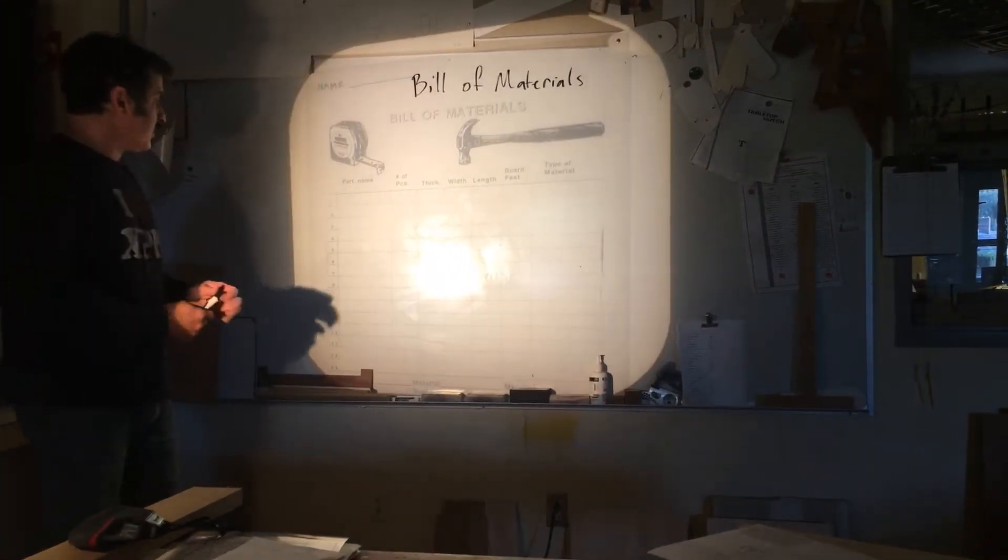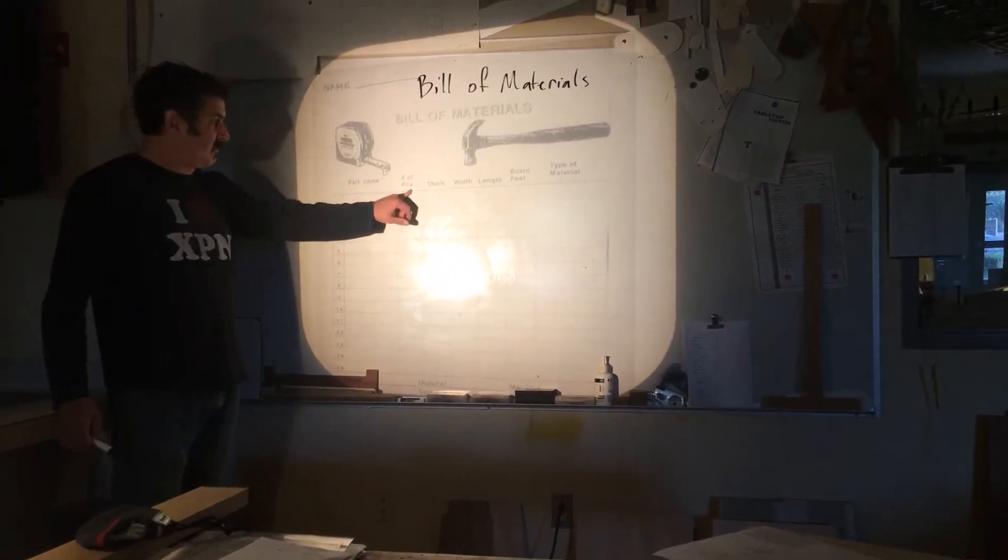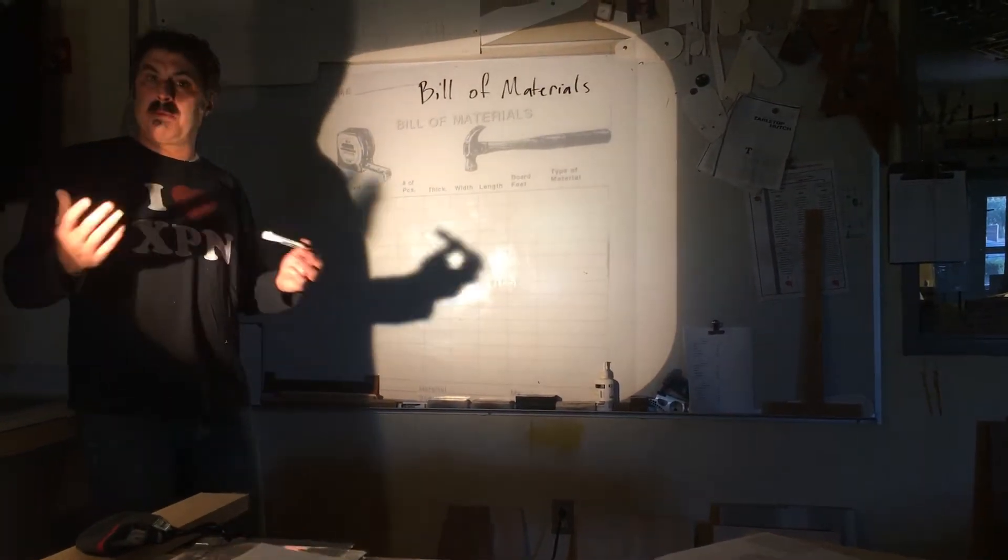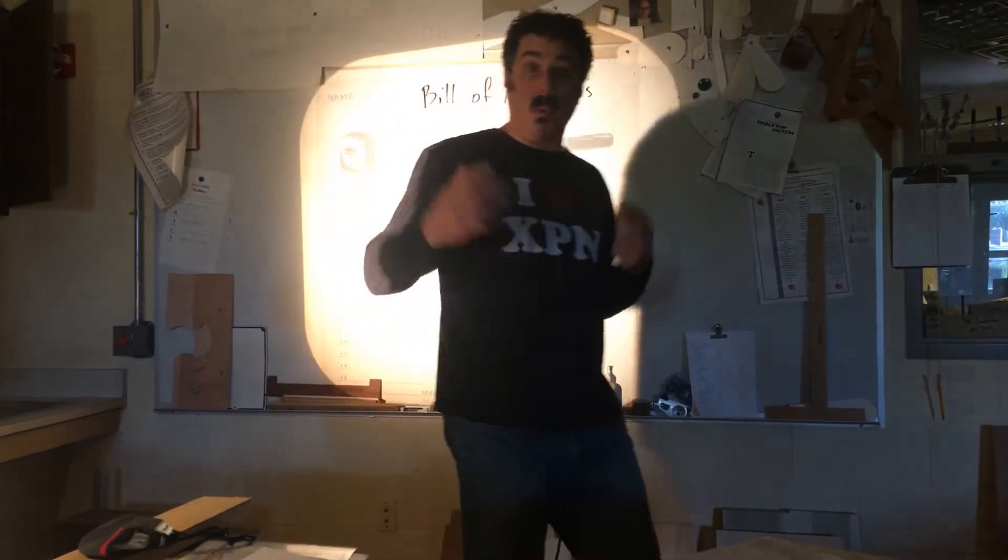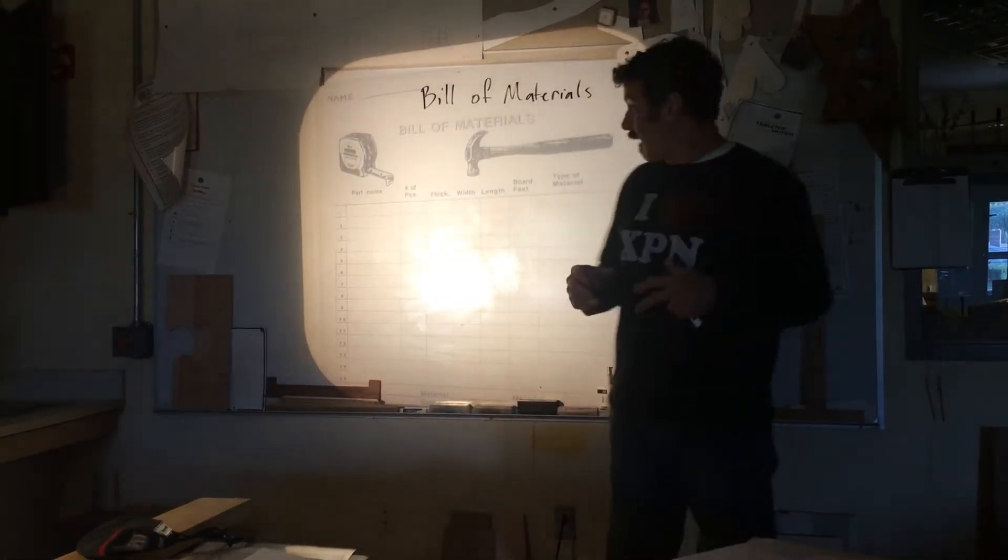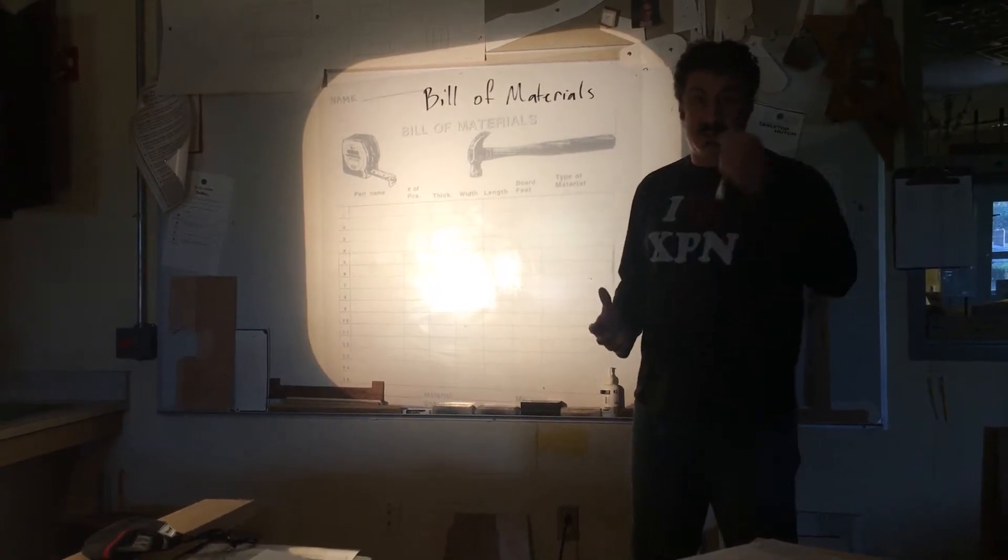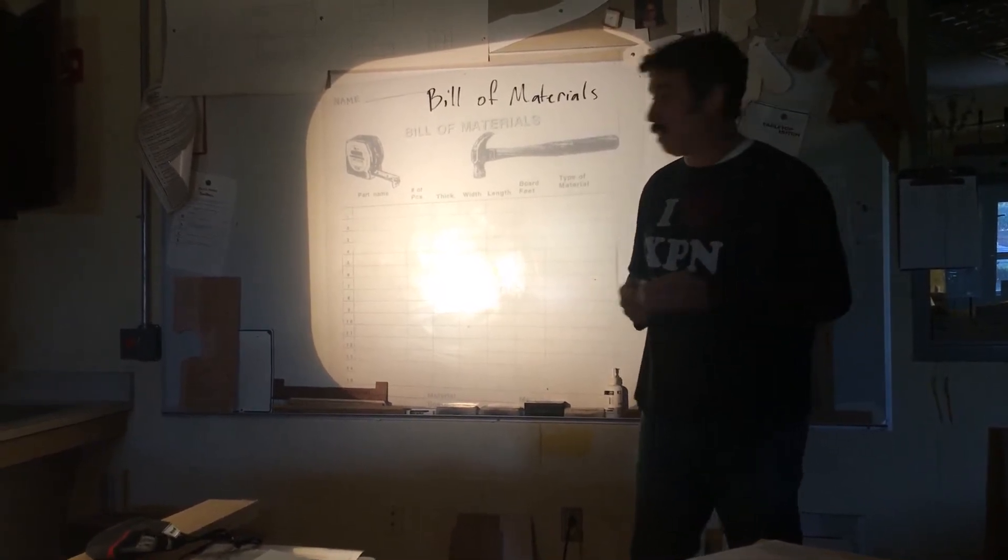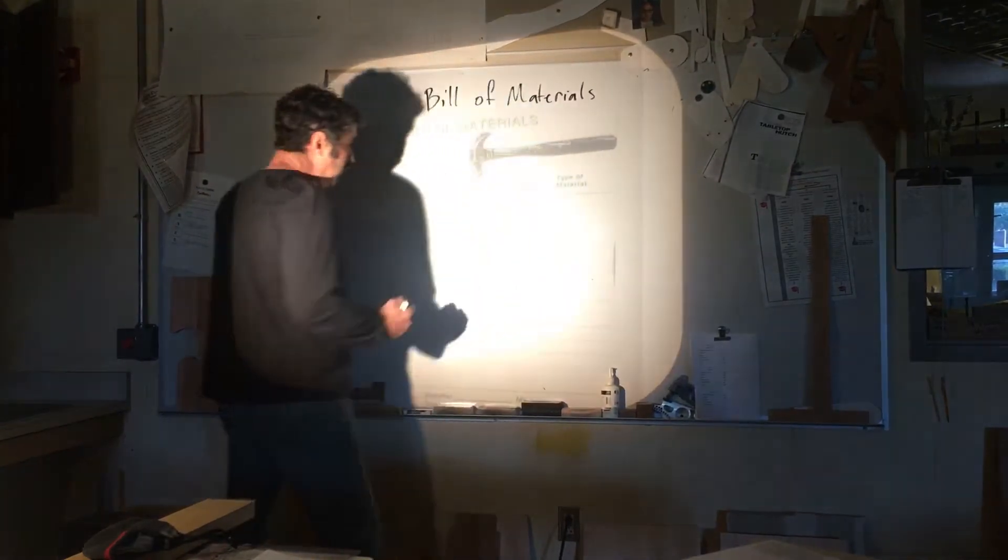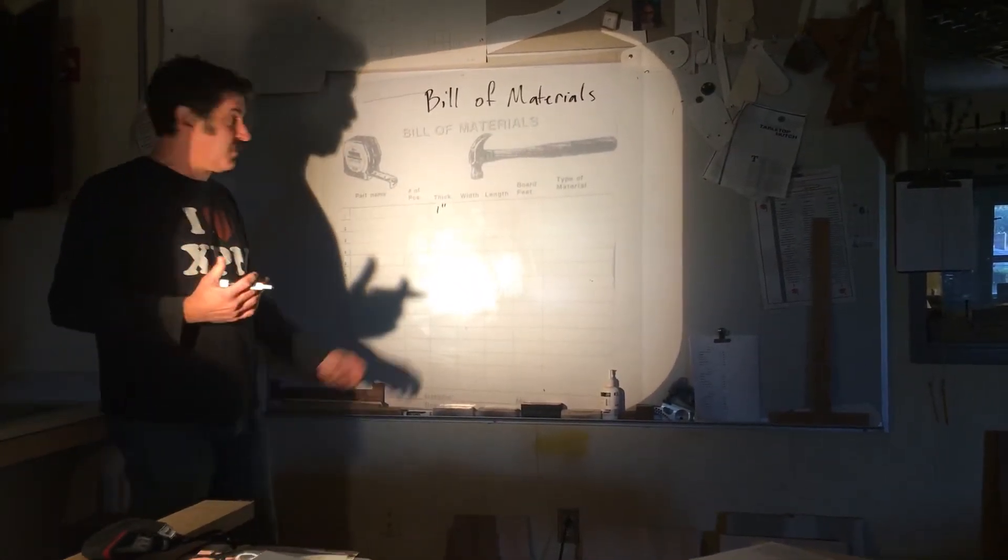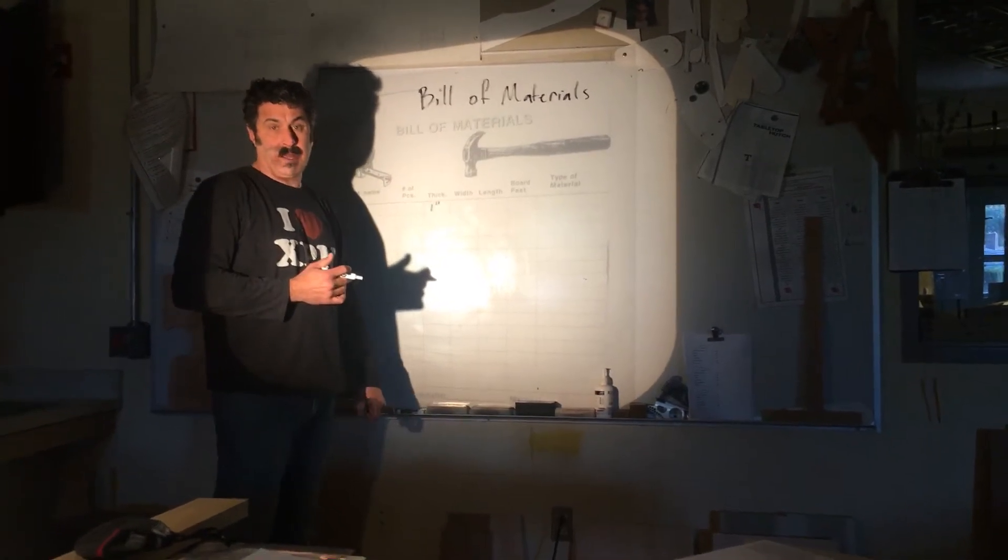All right, so this is broken down into the part name, the number of pieces, the thickness, the width, and the length. So none of the pieces that we're using is one inch thick. However, every piece that we're making starts at one inch thickness because that's how we buy our rough lumber from the mill. So, right off the bat, one inch is going to be our fixed number for everything in determining the bill of materials.